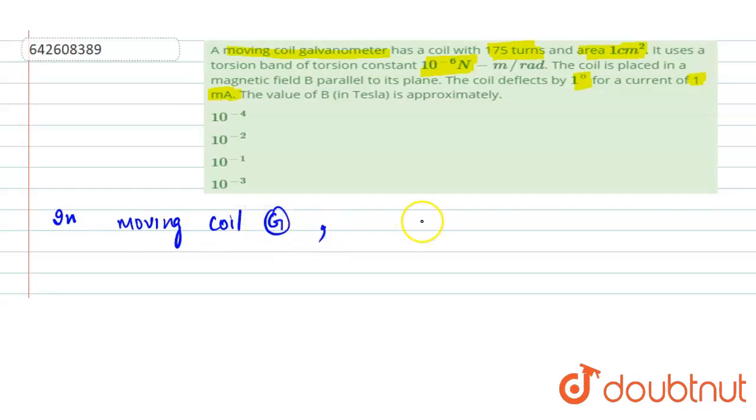In moving coil galvanometer, we know that torque is equal to C times theta. And there we have a current carrying coil which is placed in the magnetic field. So on a current carrying coil which is placed in the magnetic field, torque is written as M vector cross B vector, which is M into B. And M is the magnetic moment, so that can also be written as N into I into A into B equals C into theta.